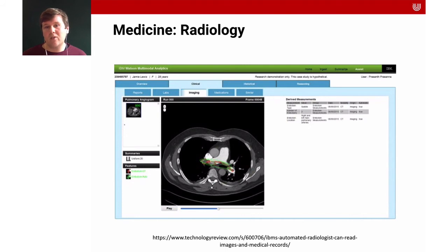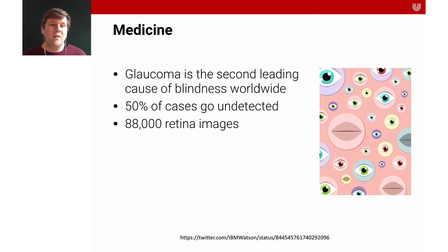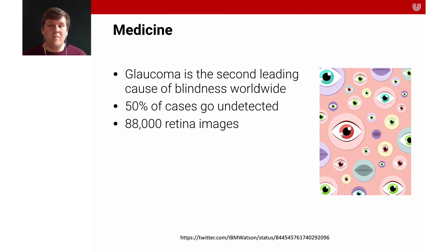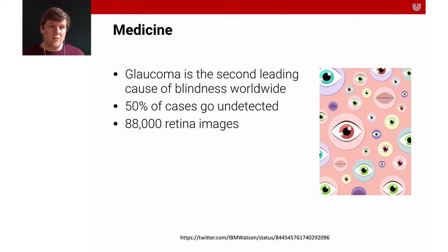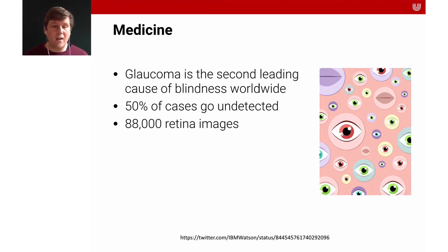Here's another example of the application of machine learning in medicine — it can be used to help doctors read images and understand medical records. One example from IBM looked at glaucoma, the second leading cause of blindness, which is a big problem because half of cases go undetected. They built a system to detect glaucoma using 88,000 retina images — knowing which cases have the disease and which don't — to make predictions that can assist doctors, though not replace them.